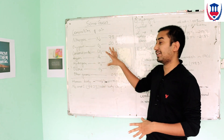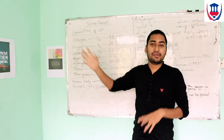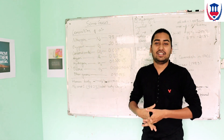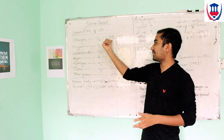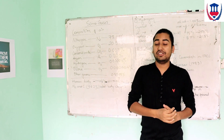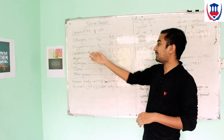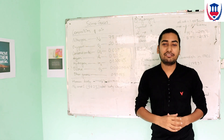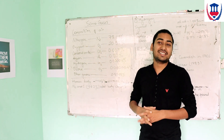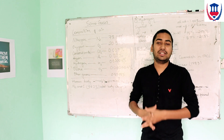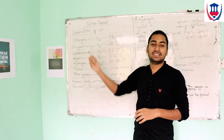Nitrogen makes up the largest portion of the earth's atmosphere at about 78.08%. The second is oxygen at 20.95%, which is the gas we use during breathing and respiration.